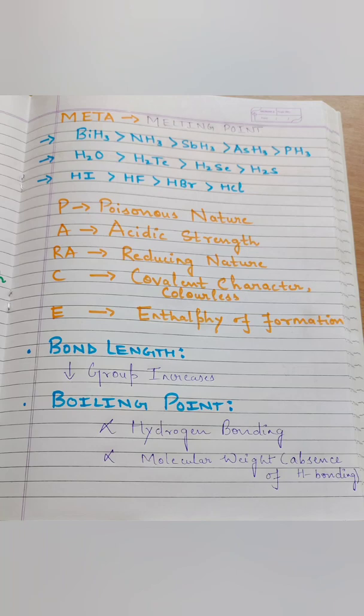The melting point order is: BiH3 > SbH3 > AsH3 > PH3 > NH3 for Group 15. For Group 16: H2Te > H2Se > H2S, with H2O as exception. For Group 17: HI > HBr > HCl, with HF as exception. This generally increases down the group, but keep the exceptions in mind.